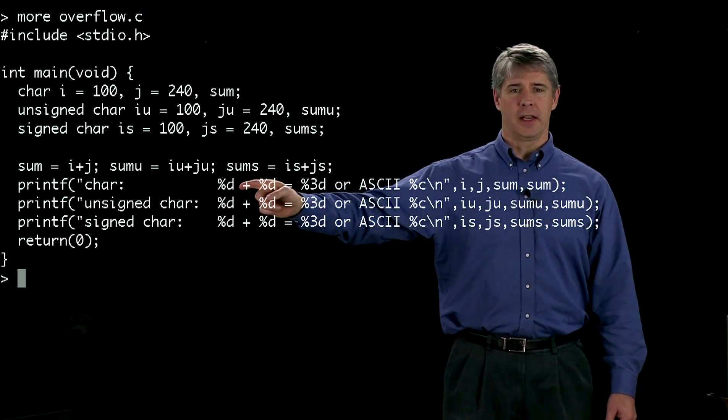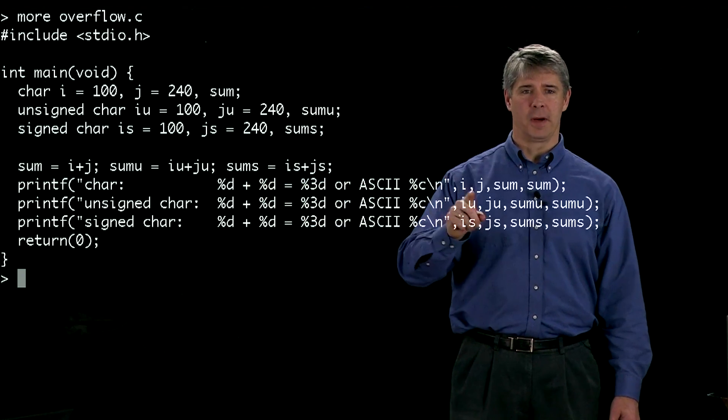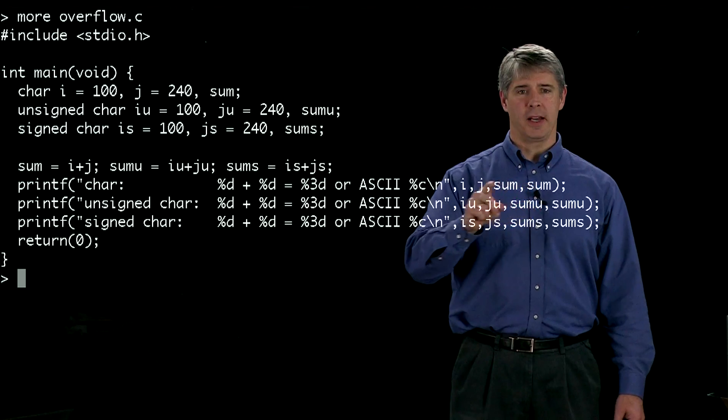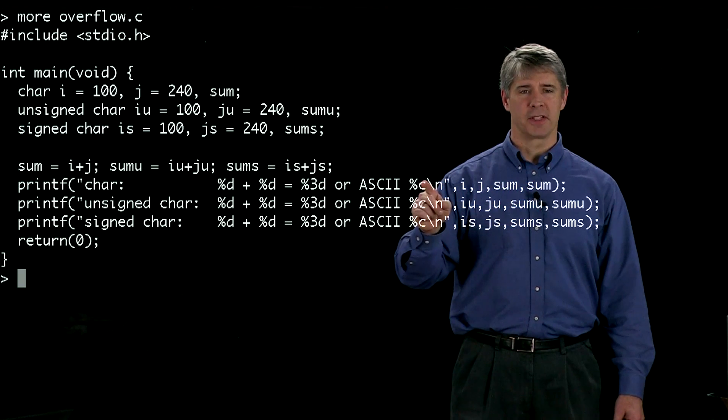So these first three integers correspond to i, j, and sum. And then we're going to print out sum one more time here as a character, that's this %c.